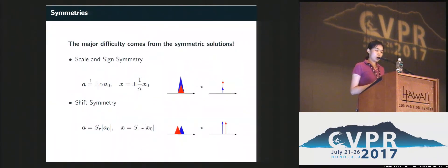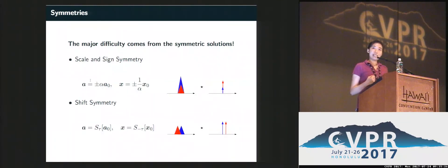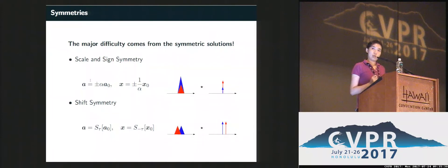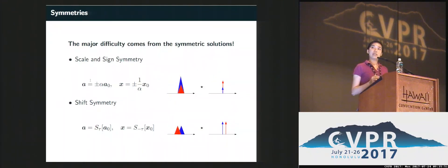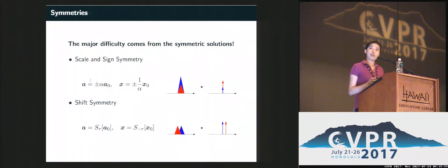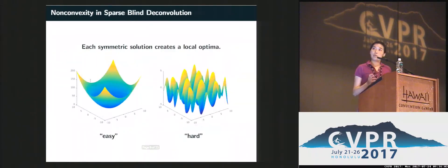This is a very hard problem and the major difficulty comes from symmetric solutions. This is an intrinsic property of the convolutional operator — it has nothing to do with the formulation. There are basically two groups of symmetry. One is scale-sense symmetry, meaning you can scale one signal by alpha and another by one over alpha, and the convolution doesn't change. The other is shift symmetry: you can shift two signals in opposite directions and their convolution remains the same. Since scaling or shifting a signal doesn't change its sparsity, these symmetries create a large group of equivalent solutions, resulting in many local minima and complicated geometry.